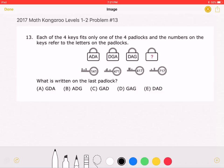This is the 2017 Math Kangaroo Levels 1-2, Problem No. 13. Each of the four keys fits only one of the four padlocks, and the numbers on the keys refer to the letters on the padlocks. What is written on the last padlock?